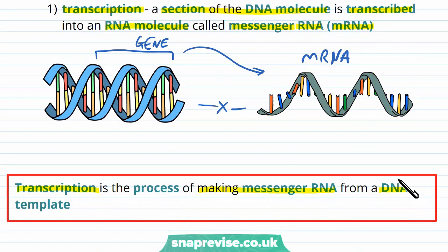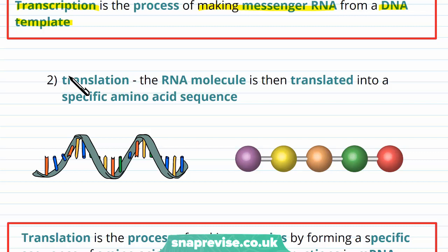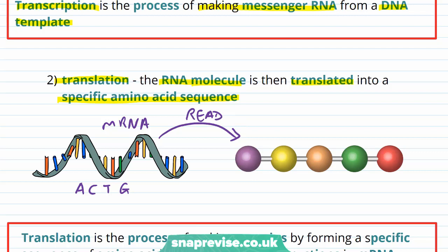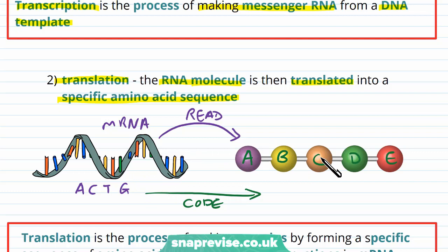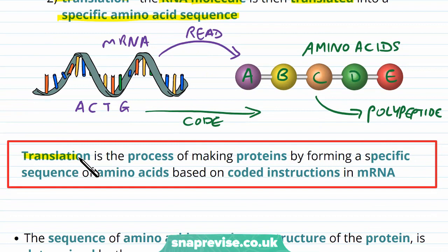The second stage is known as translation. The RNA molecule is then translated into a specific amino acid sequence, and this builds up the protein. The mRNA has the information to make the protein — all of those nucleotides and bases made of A, C, T, and G — and this gets read by particular machinery in the cell. As it's being read, amino acids are gathered in a particular order, and this order is governed by the order of bases on the mRNA. So the code of bases is translated into a code of amino acids, which join up by peptide bonds and form a polypeptide. By definition, translation is the process of making proteins by forming a specific sequence of amino acids based on coded instructions in mRNA, and those original instructions were read from DNA.